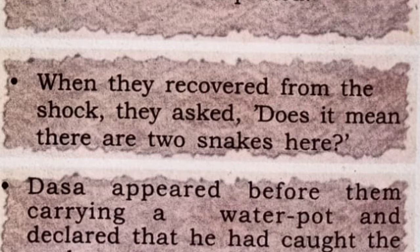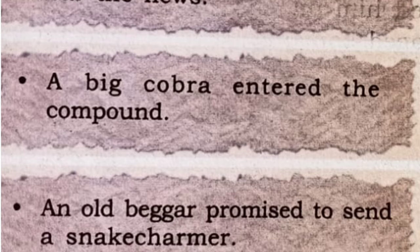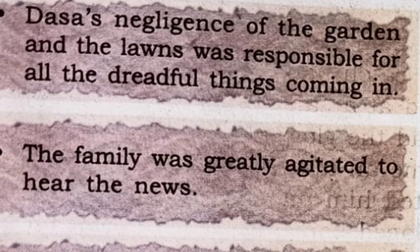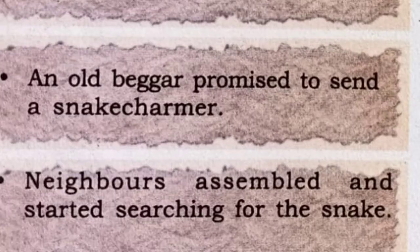Now we can sequence the events in the flowchart given below. What would be the first event? A big cobra entered the compound. Next event: the family was greatly agitated to hear the news. Next: Dasa's negligence of the garden and the lawns was responsible for all the dreadful things coming in.